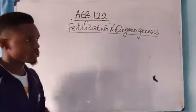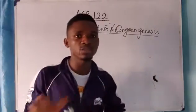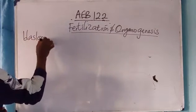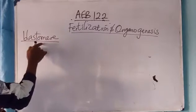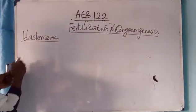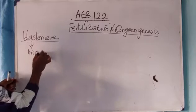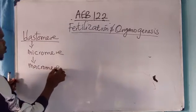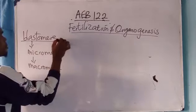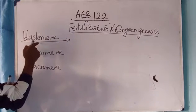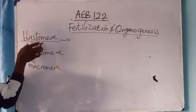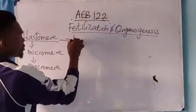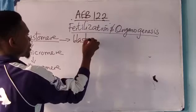This topic has to do with cleavage of the zygote — the process by which the zygote splits into different parts called blastomeres. When the zygote splits, it forms blastomeres. Smaller blastomeres are called micromeres, while larger ones are called macromeres. There is also a mass of cells called the blastula.